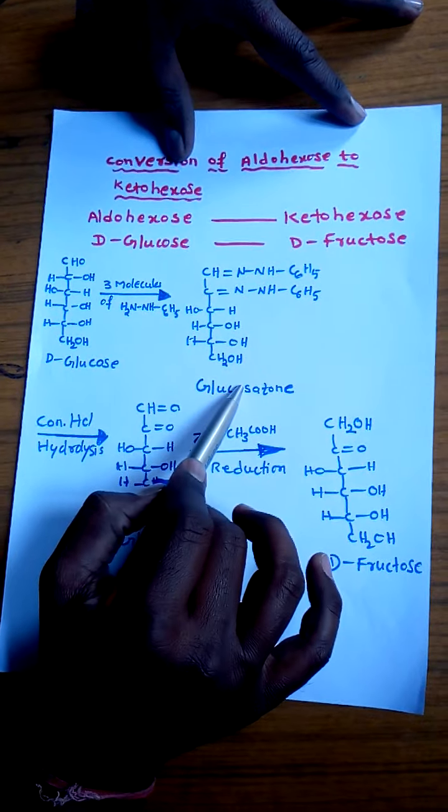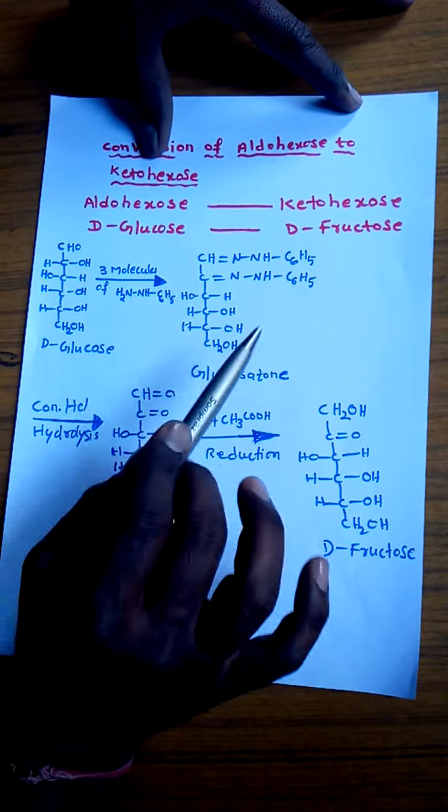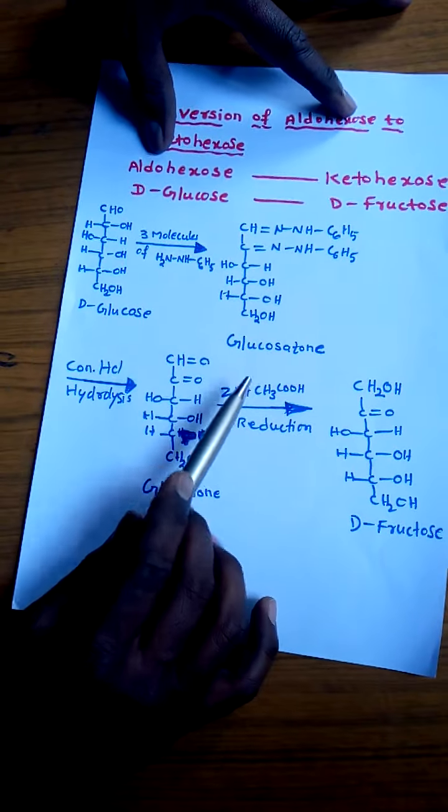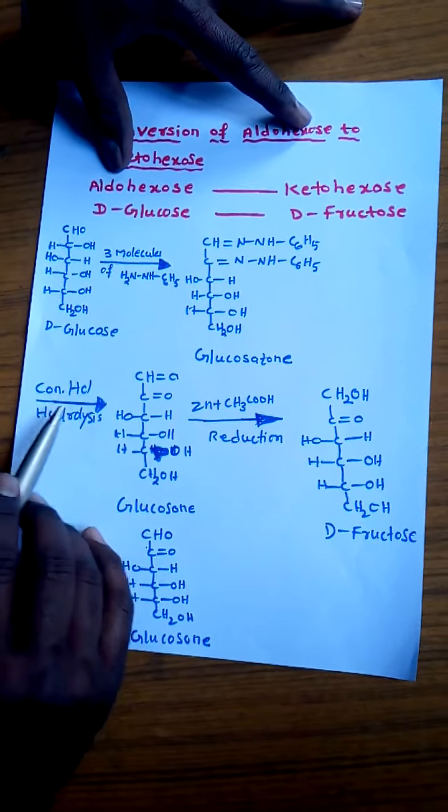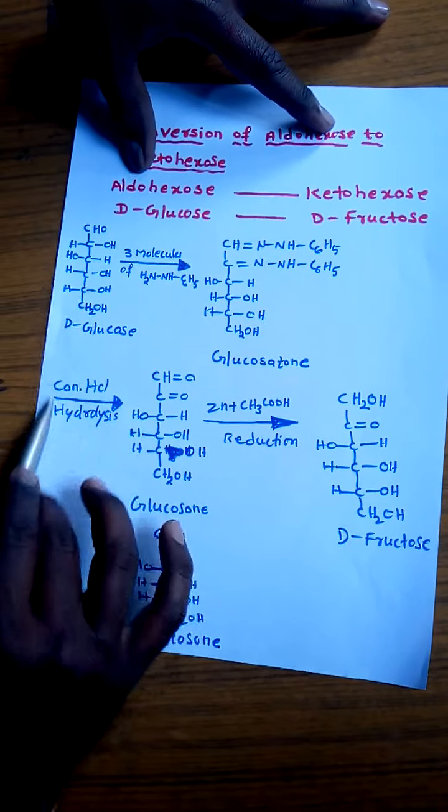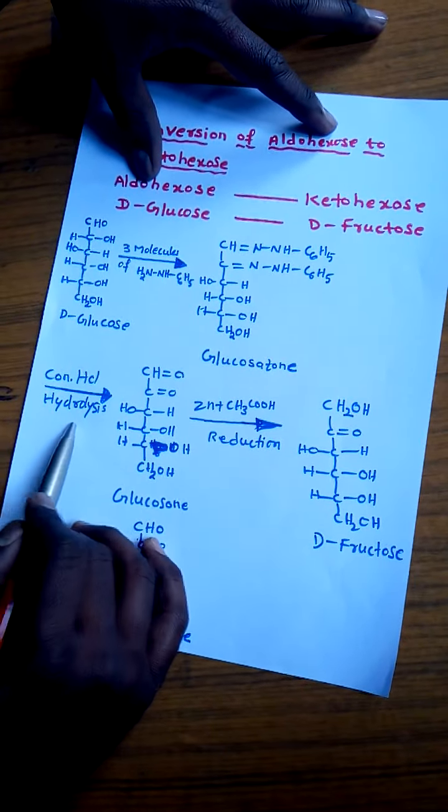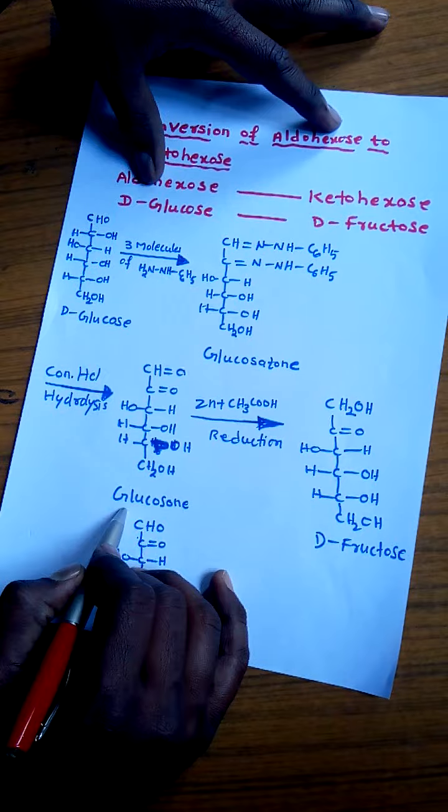As it is the condensate product of glucose we call it glucosazone and this glucosazone is then treated with concentrated HCl. In the presence of concentrated HCl this glucosazone undergoes hydrolysis and we get the glucosone. Here one aldehyde group and ketone group both are there.